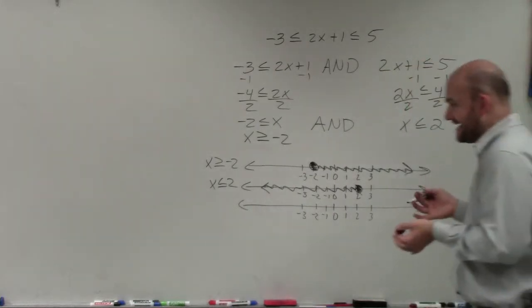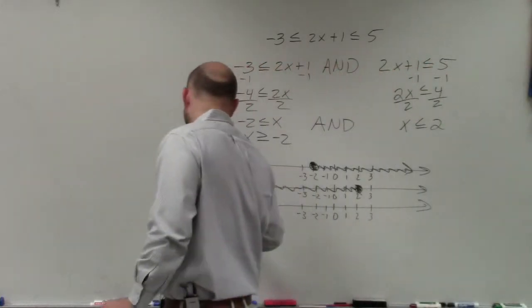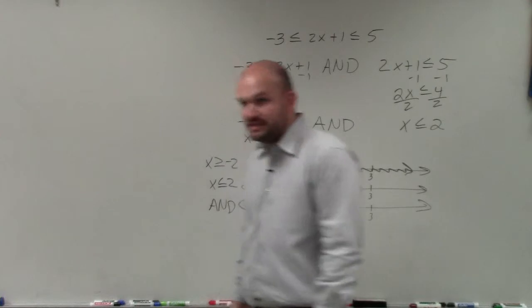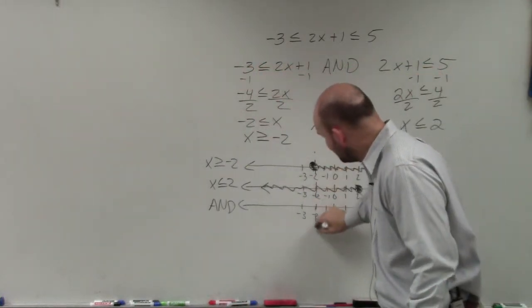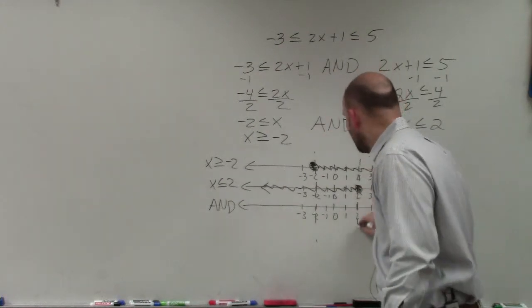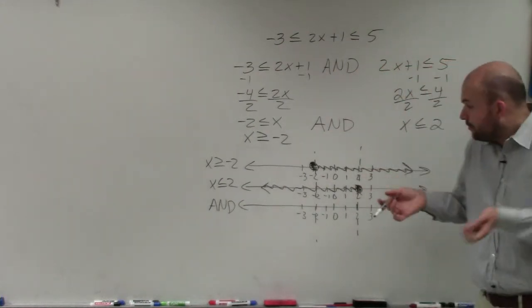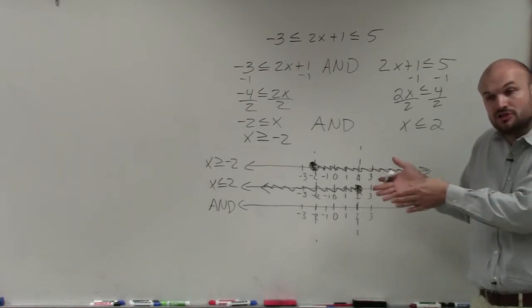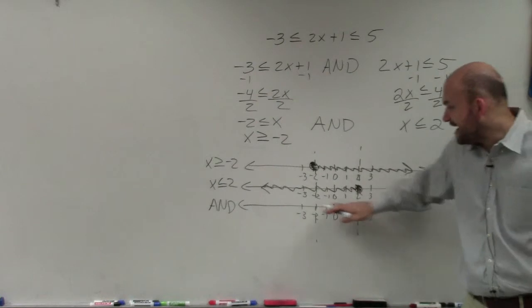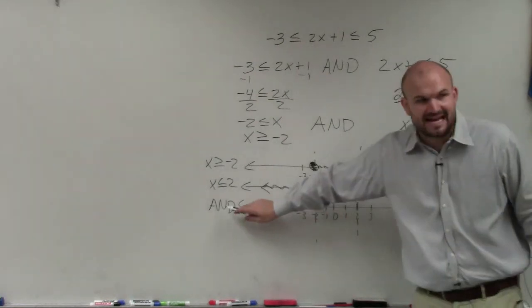Now remember when I talked about 'and', 'and' is going to be the intersection of these two graphs. So basically what you guys can see is between the values of negative 2 and positive 2 is the only point where both graphs are true, or the solutions are a part of both of the graphs. So the final answer, which is just the 'and' graph...